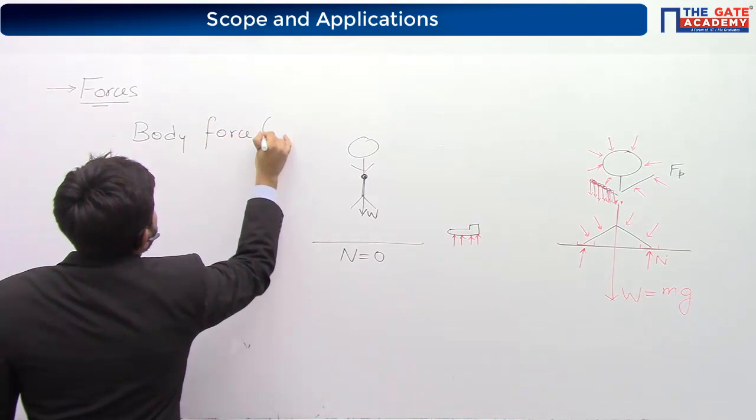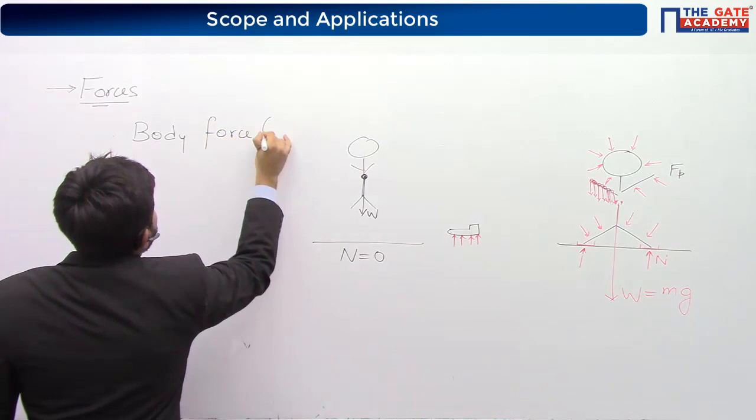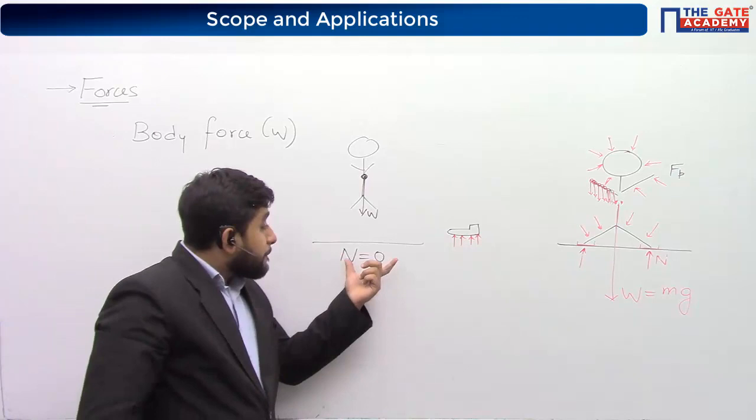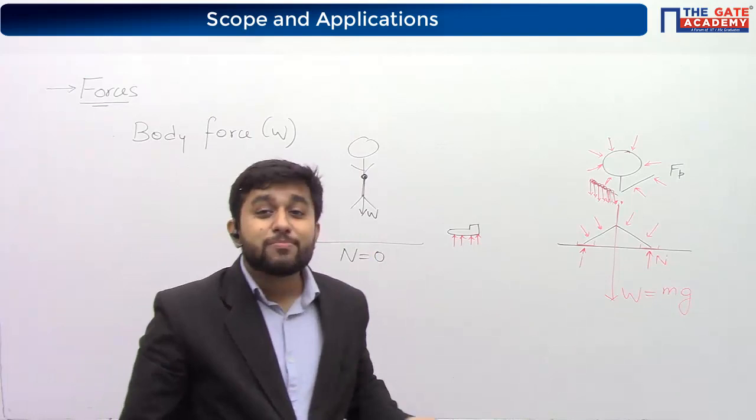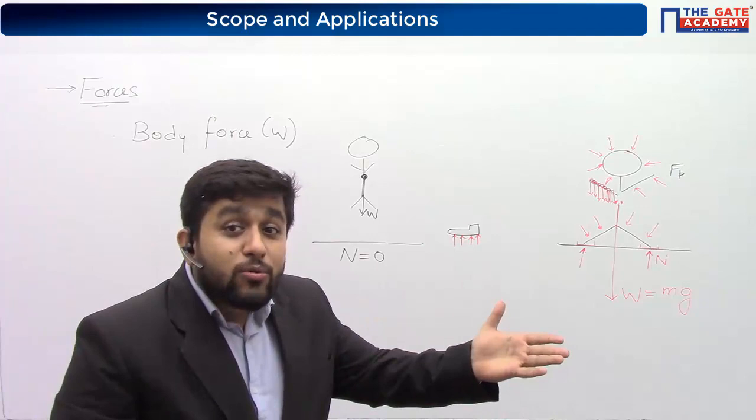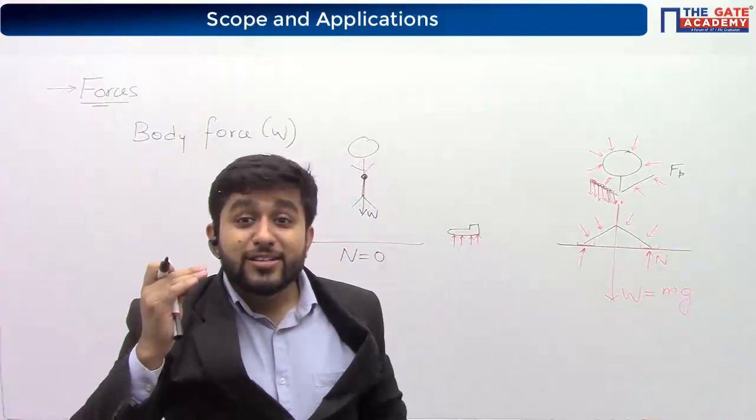The forces which act on a body because of gravitational field, magnetic field, and electric field are known as body forces. These forces act on each and every particle of the body - weight is one example. The forces applied by surrounding mediums in direct contact - like ground or air touching the body - are a different category.